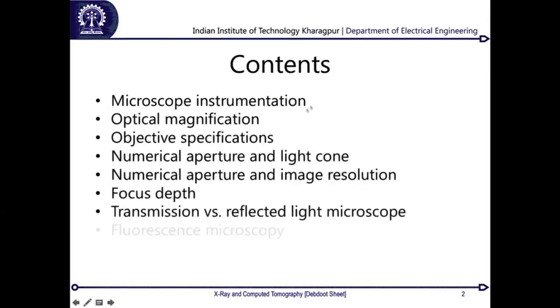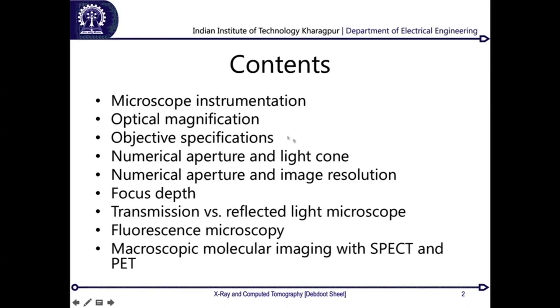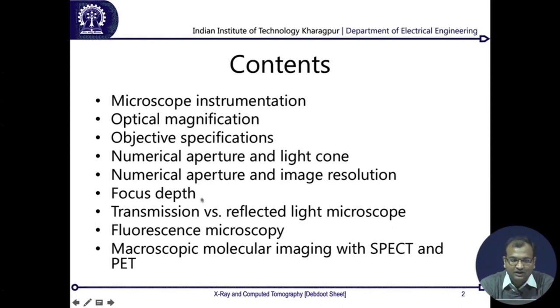From there we enter into a very interesting phenomenon called molecular imaging. We will do molecular imaging for microscopy first, and then move on to molecular imaging on the mass scale. This lecture is arranged so that I will introduce you to microscope instrumentation, concepts of optical magnification, what is an objective and its specifications, the relation between numerical aperture, light cone, image resolution, and depth of focus. From there, two different modes of microscopy — transmission and reflected light — leading to fluorescence microscopy and then molecular imaging on the macroscopic scale with SPECT and PET.